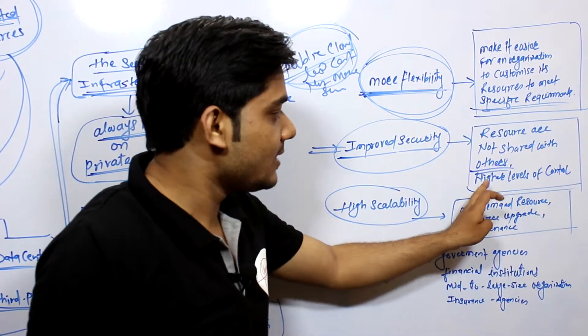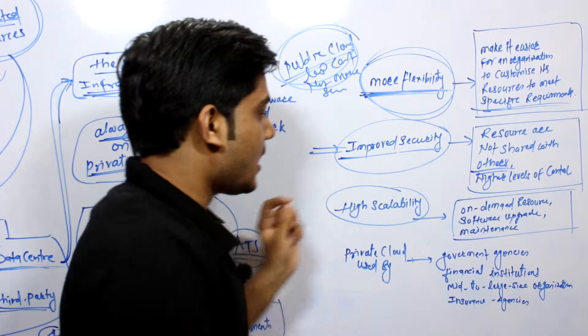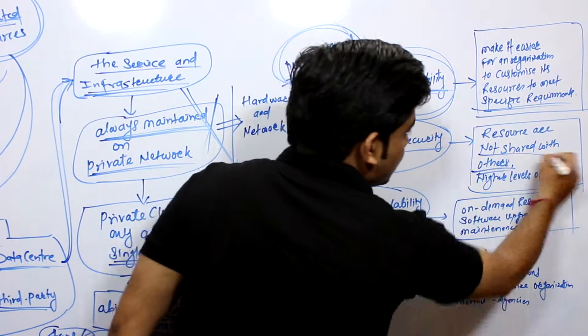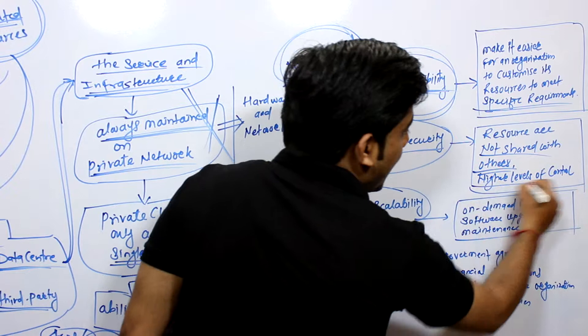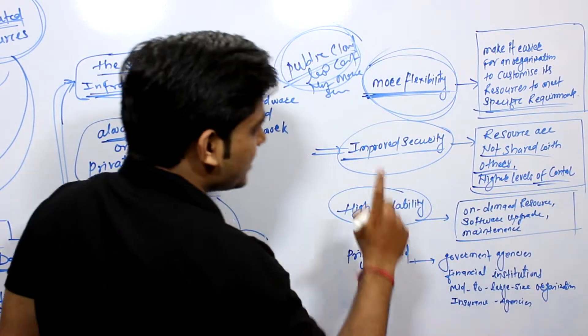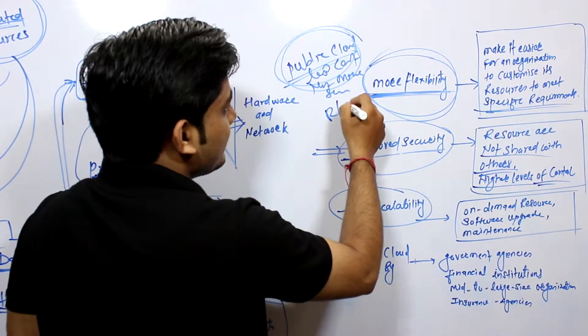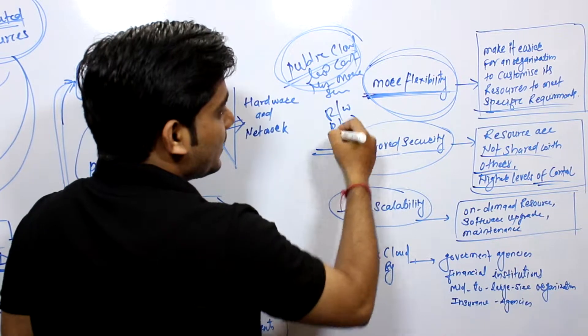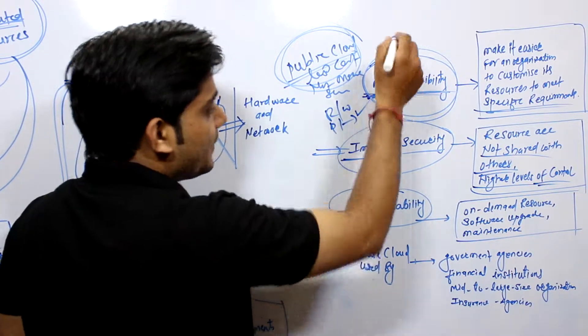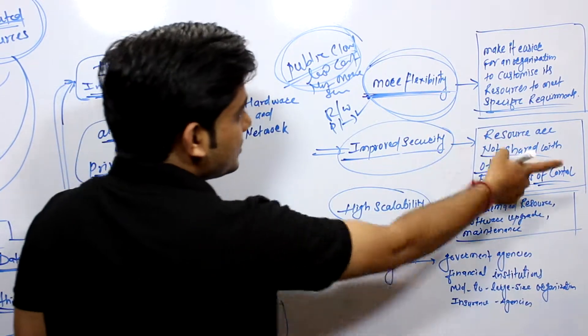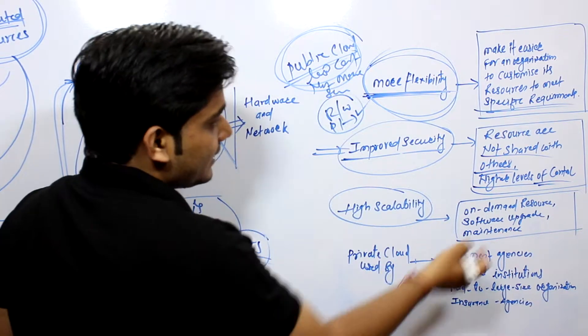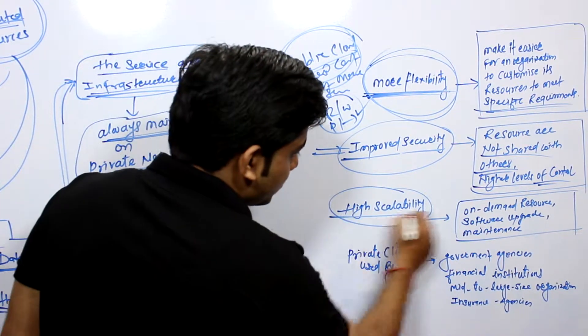And higher level of control. You get control where resources cannot be shared by anyone, and second thing is higher level of control you can have, like read, write, or giving permission to someone. You can give permission only to that person, so he or she will be able to access your data like applications.